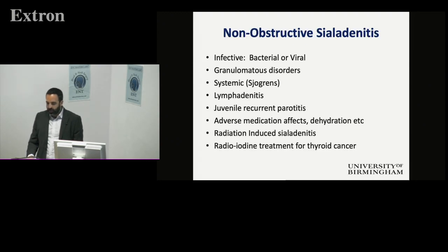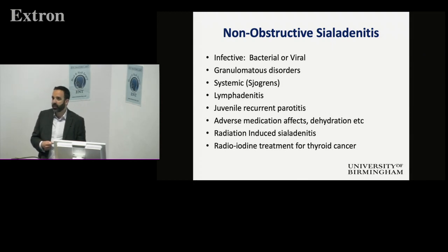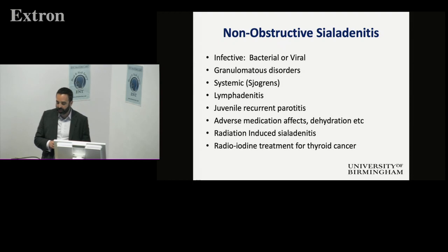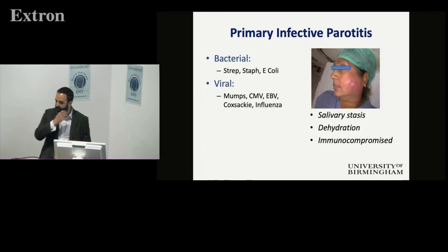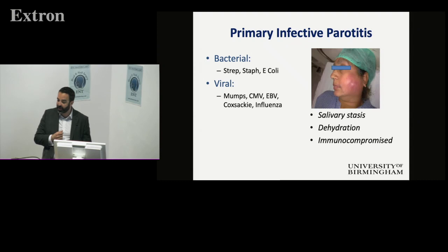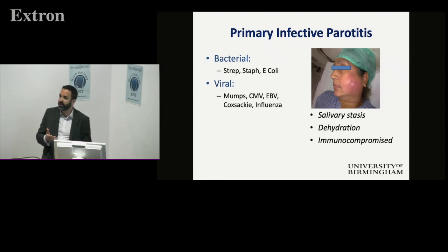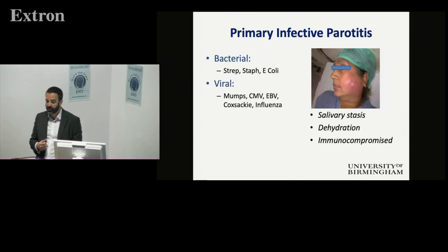Non-obstructive sialadenitis — you can use your surgical sieve to work through the different causes. Starting with infective causes, which is what you might see primarily on the acute take: you might see an acute bacterial infection or a viral infection. A viral one we often think of in children with mumps, but it can happen in adults, especially those who are immunosuppressed.